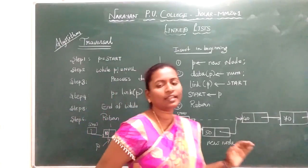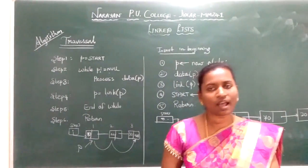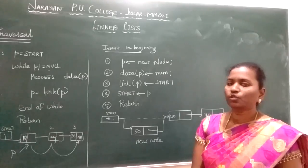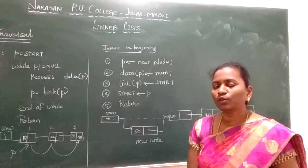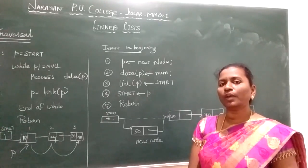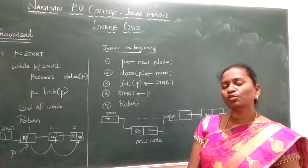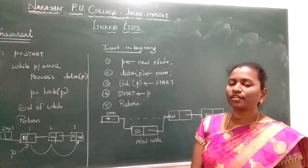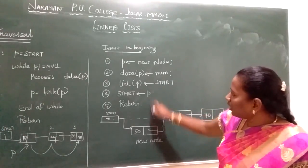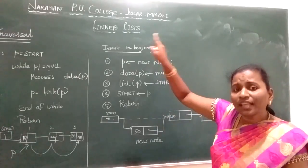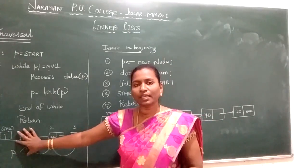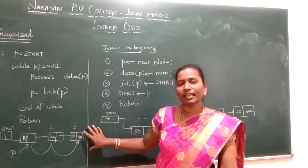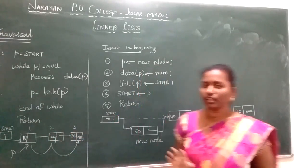While creating, traversing, inserting, and deleting a linked list, keep these points in mind. A node is created using 'struct' with two data members: the data field and the pointer/link field. There are three possible ways to do insertion: at the beginning, at any given position in the middle, or at the end. The link field holds the address of the next node; the data field holds the information.